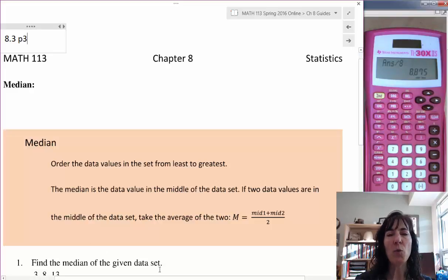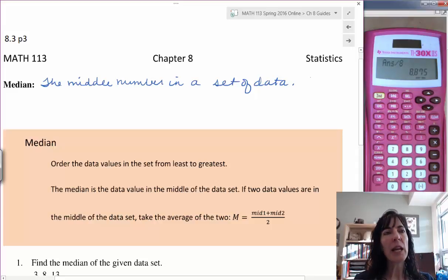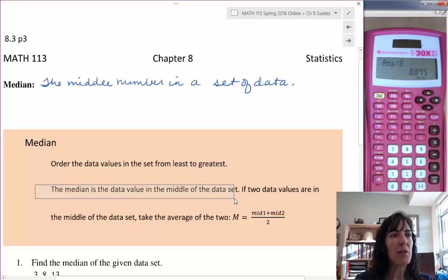But here with a median, we aren't going to see that. The median is the middle number in a set of data. To find that middle number, we have to first order the values, and you can do them least to greatest or greatest to least, it doesn't matter, but I just wrote down here to write the numbers least to greatest. Then the median is the data value that's in the middle of the data set.